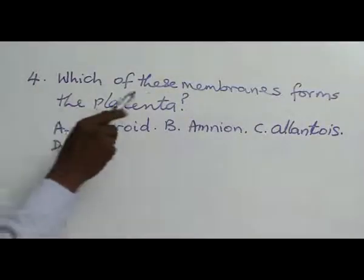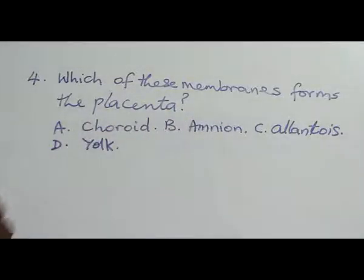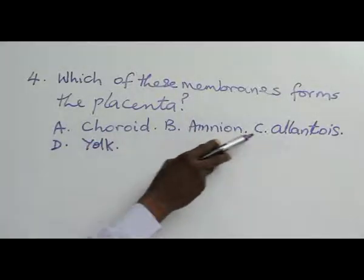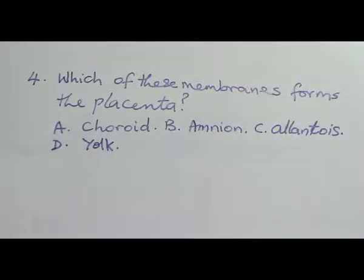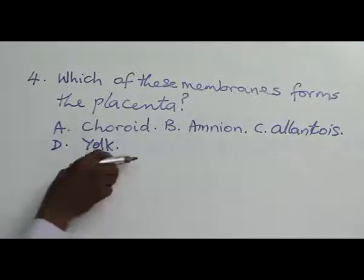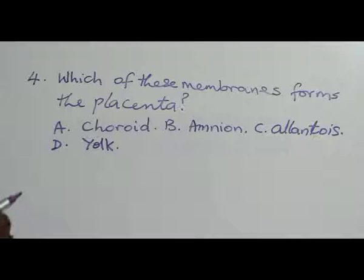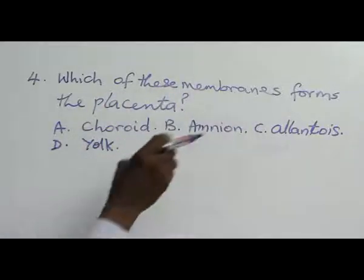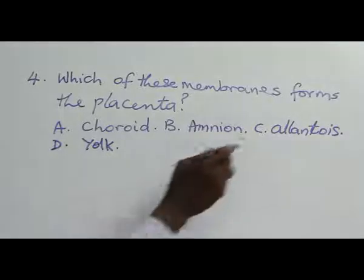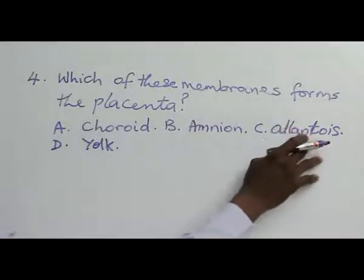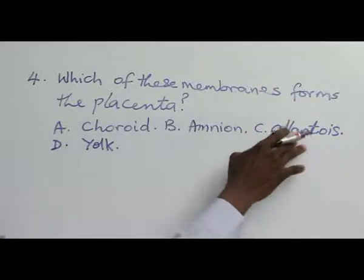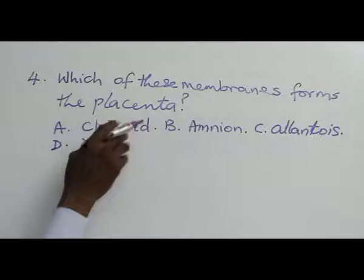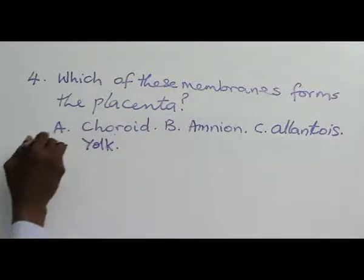Question 4: Which of these membranes forms the placenta? A: Chorion. B: Amnion. C: Allantois. D: Yolk. The yolk is not a membrane — it is the food for the embryo. The amnion is the membrane that forms a sac around the embryo with fluid. The allantois is the membrane that forms an umbilical cord connecting the baby to the placenta, and part of it also forms part of the placenta. But the major membrane that forms the placenta is the chorion. So the answer is chorion.